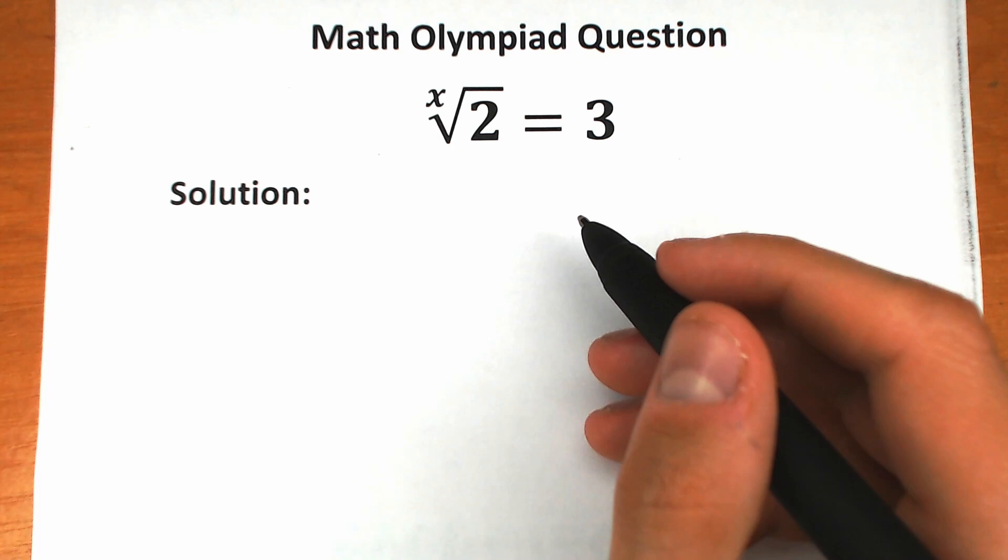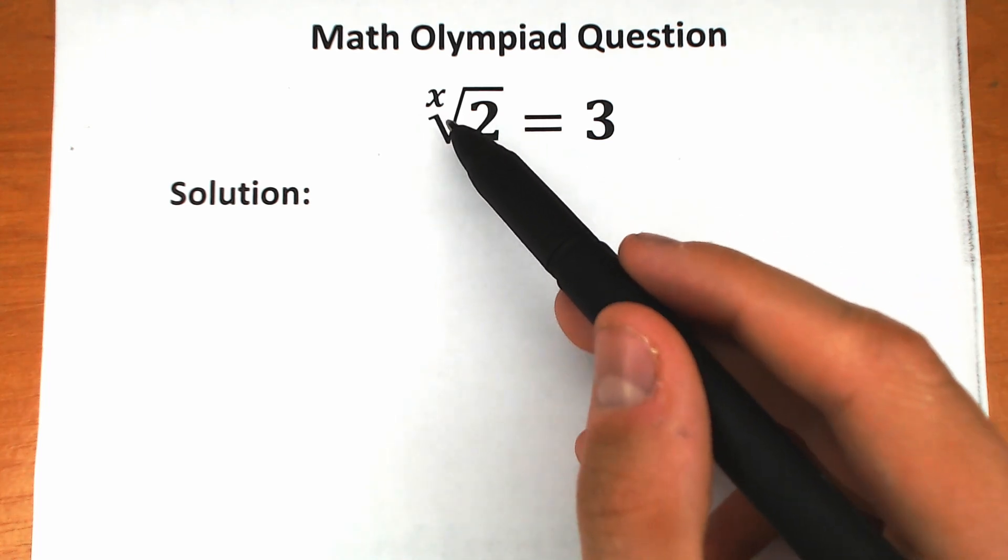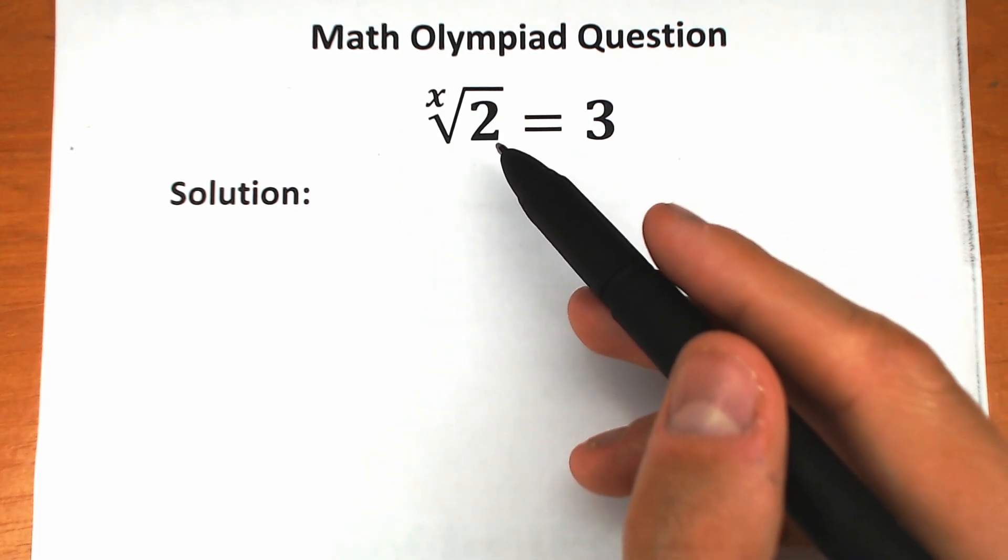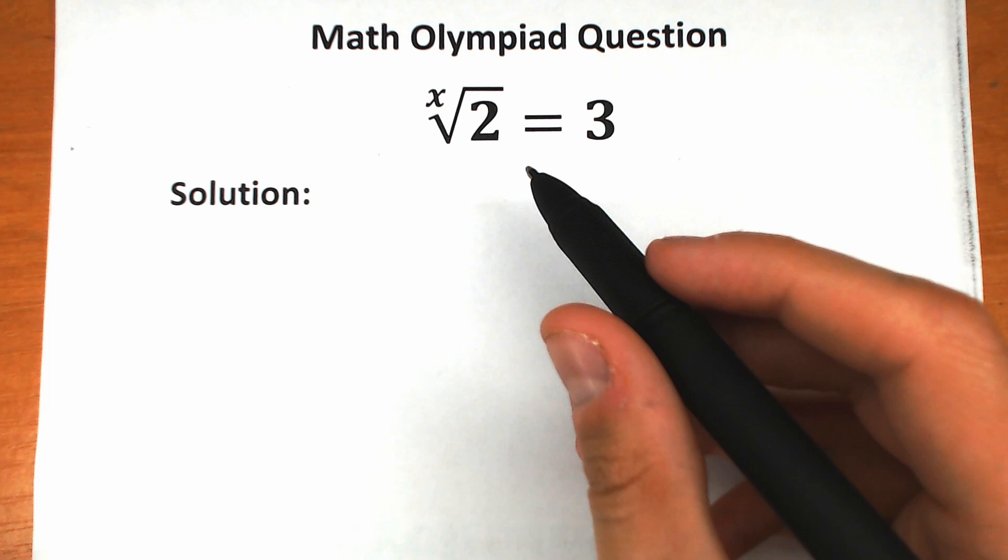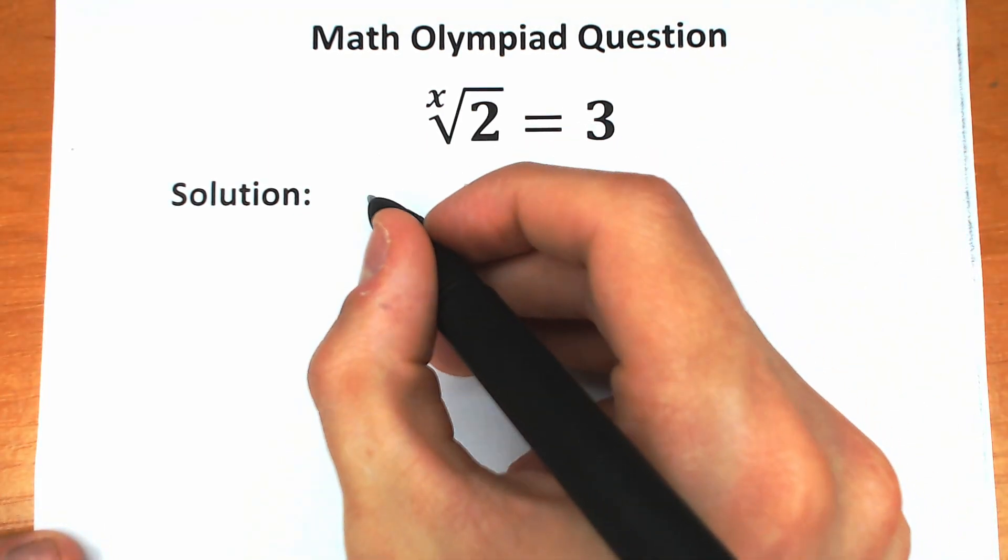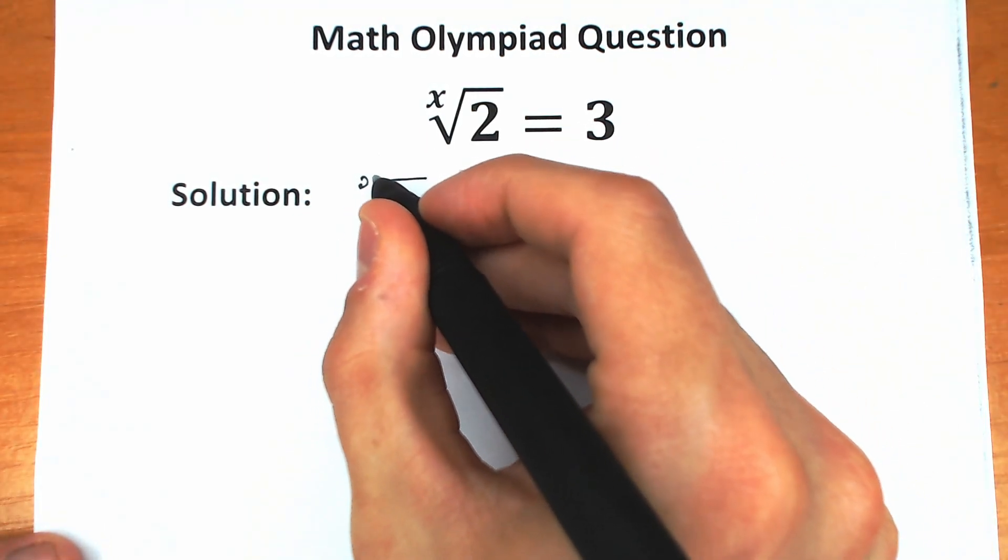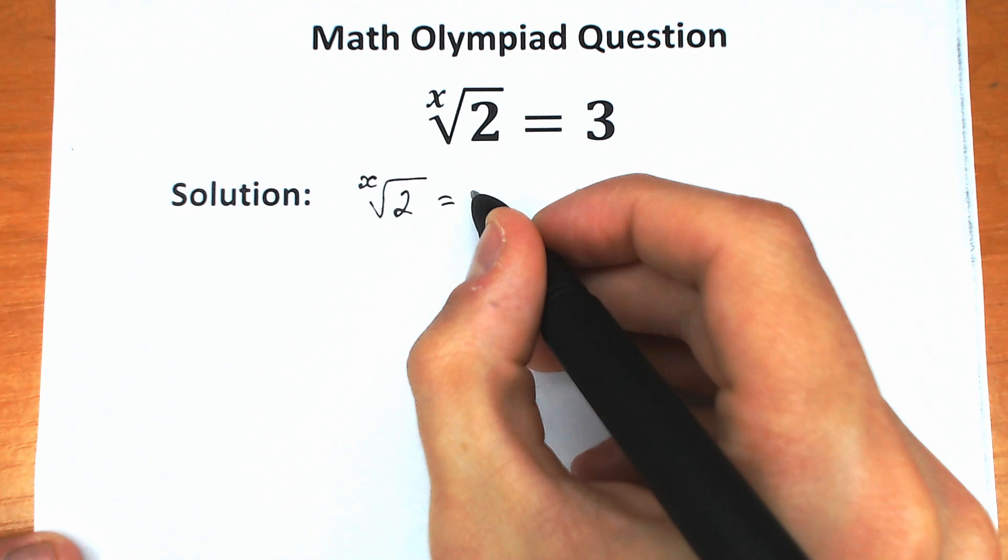This is a very tricky challenge and a lot of students make this mistake because they don't know how to work with x in this position. In this video, let's look at how we can solve this challenge. First of all, let's rewrite our challenge. We have x root of 2 equals 3.